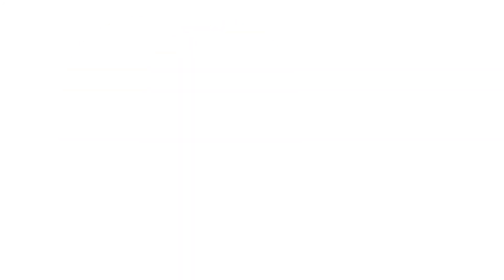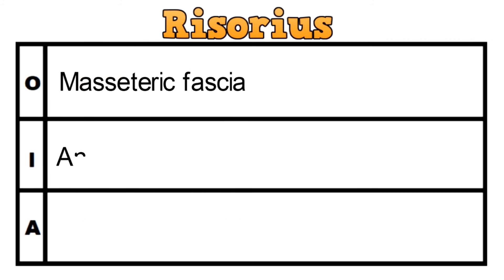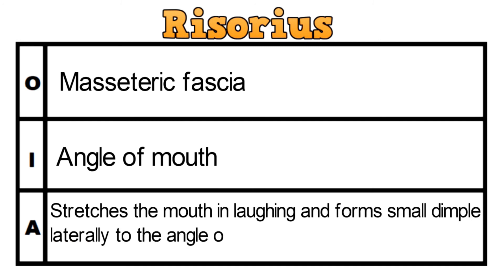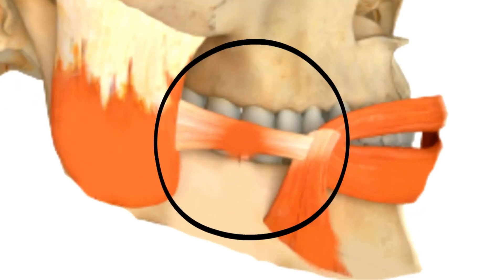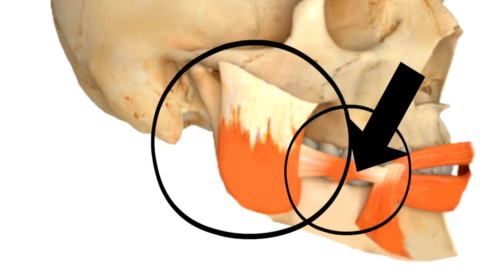The last muscle for today's video is the risorius. It originates from the masseteric fascia which covers the masseter muscle. The insertion of the muscle is the angle of the mouth, and its action is to stretch the mouth in laughing and form small dimples laterally to the angle of the mouth. This horizontal muscle you can see is the risorius. The muscle in the back is the masseter, covered by the masseteric fascia, which is the point of origin of this muscle.